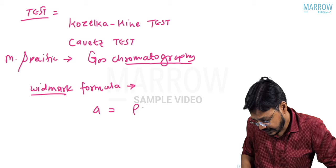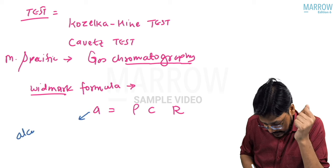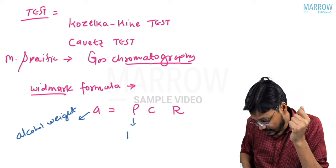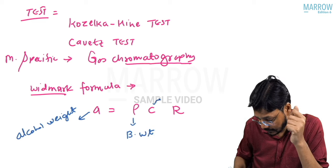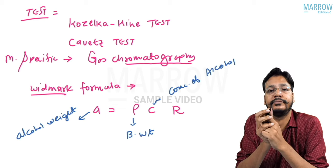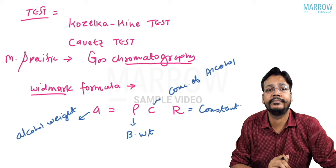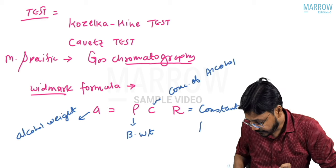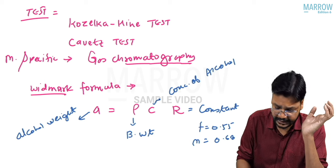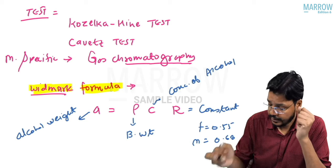The Widmark formula is: A = P × C × R. Here, A is the alcohol weight, P is body weight, C is the concentration of alcohol, and R is a constant. The value of R in females is 0.55, and in males it is 0.68. If any variable is given, we can detect the others using the Widmark formula.